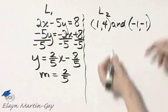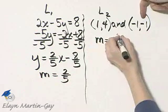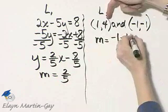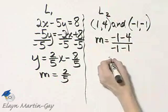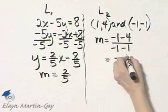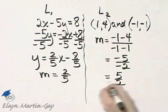Now let's find the slope of the line through these two points. Here we'll use the slope formula. So it's y minus y over x minus x, and that's negative 5 over negative 2. That slope is 5 halves.